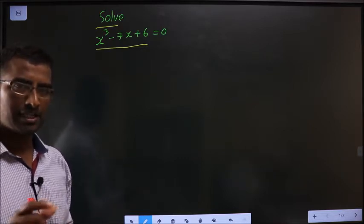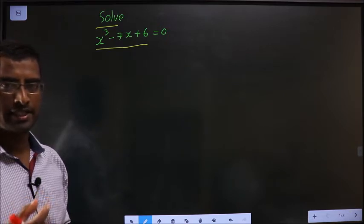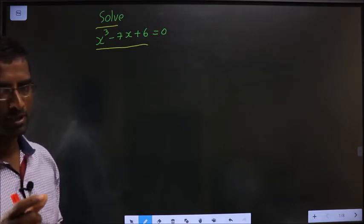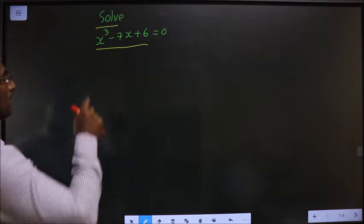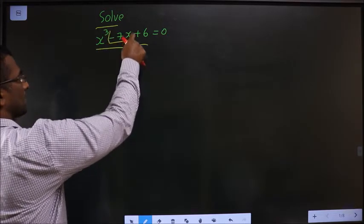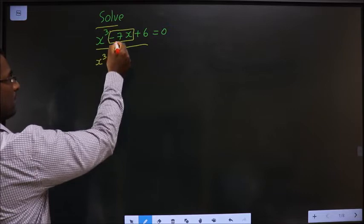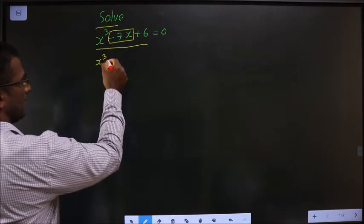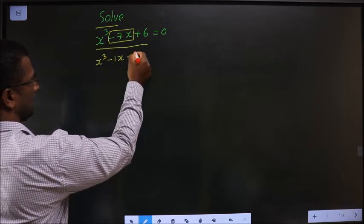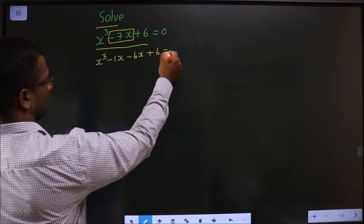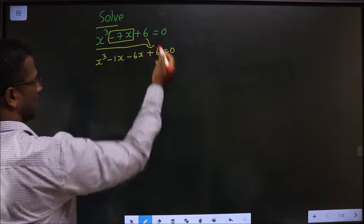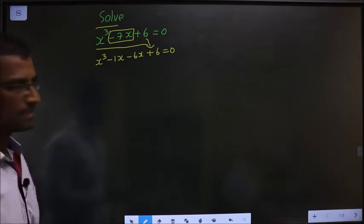Remember even in quadratic equation we used to change the x term. Here also the same thing. I will change this x term. In place of minus 7x I will be writing minus 1x minus 6x, and plus 6 as it is.